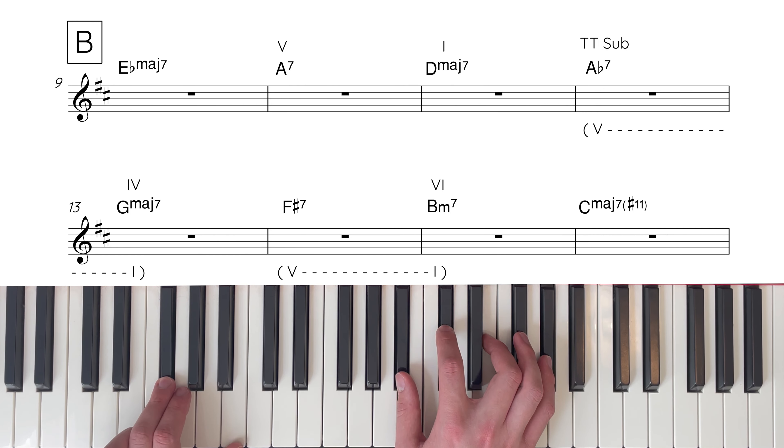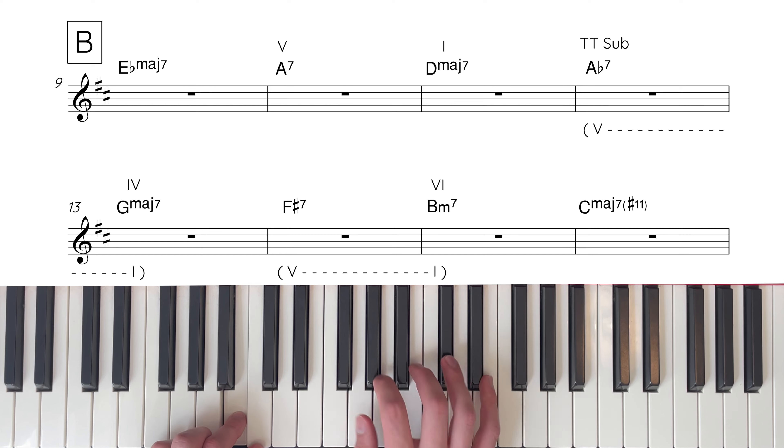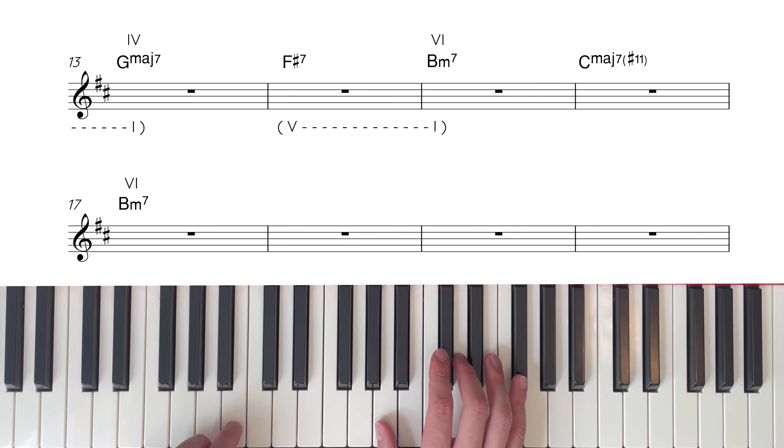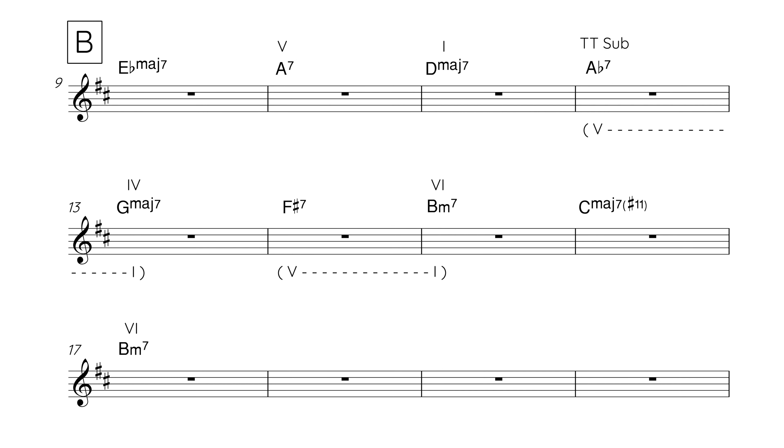The bass movement from G major 7 over F sharp to B minor 7 outlines a 5-1 cadence. Cedar Walton jumps on this and tweaks the G major 7 over F sharp chord to F sharp 7 to fully embrace the cadence. This feels a long way from the original chord of G major 7 but the melody and extensions on the F sharp 7 chord back up its G major origins but we'll get into that later.